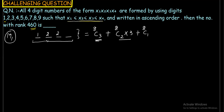Case 4: when only one digit is used — all four digits are 1, giving just 1 way. So the total numbers starting with 1 is: 8C3 + 8C2 × 3 + 8C1 × 3 + 1 = 56 + 84 + 24 + 1 = 165.